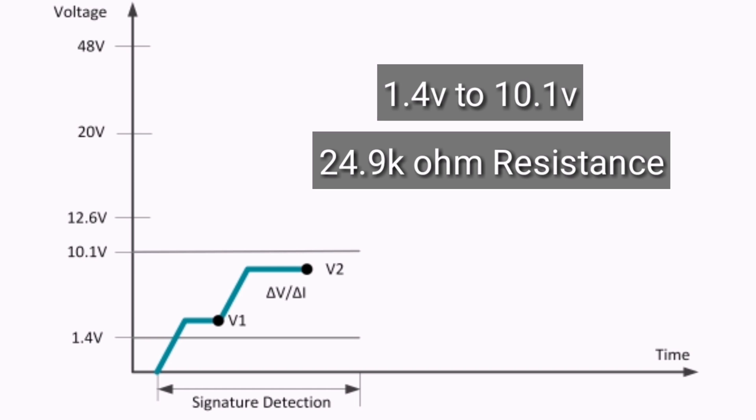The signature resistor is verified by measuring the change in current when two different voltages in this range are applied to the powered device. The power sourcing equipment records the current measurements of the two applied voltages to verify the signature resistor. Once the signature has been detected, the PSE knows it can safely deliver higher voltages and move on to the next step: classification.